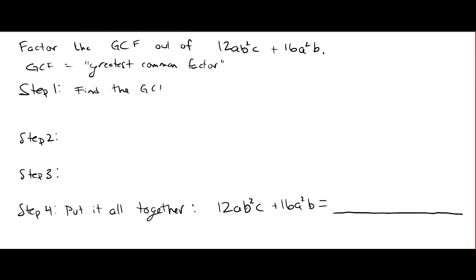And the way we've been doing this is we make a table with all the factors, all the prime factors. Let's go with that. So 12ab squared c, we're going to list its prime factors, we're going to list its prime factors of 16a squared b.